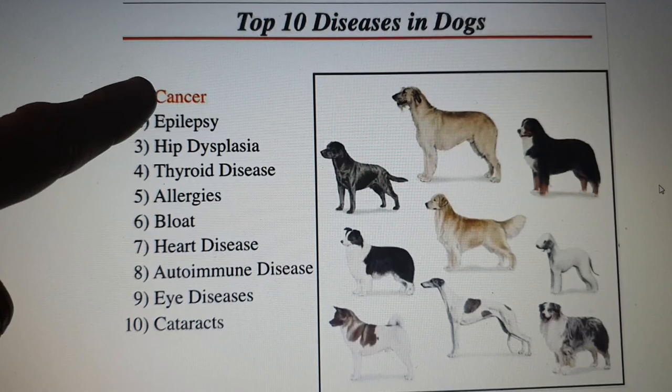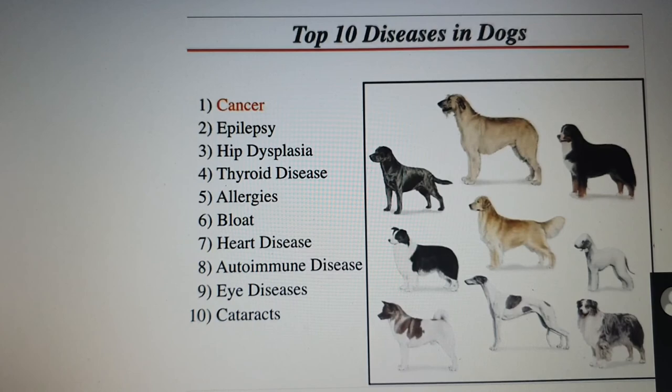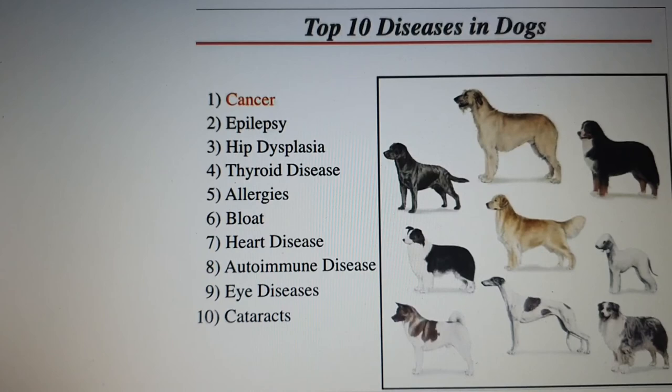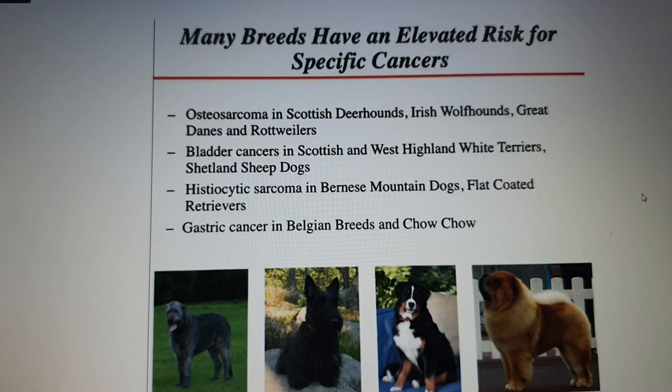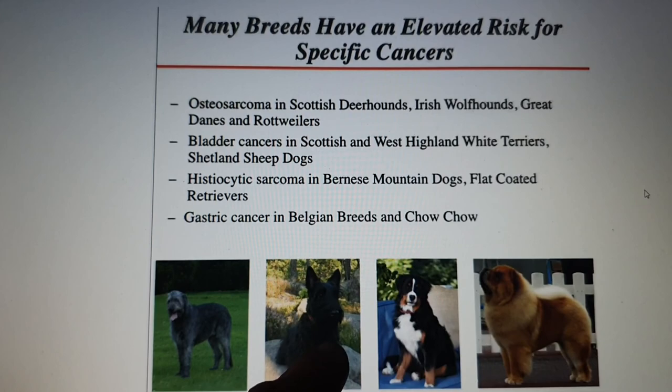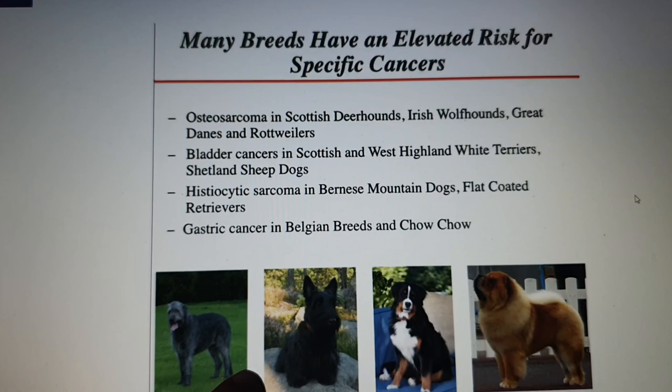The top 10 diseases in dogs: cancer is the most prominent and deadly. Then epilepsy, hip dysplasia, thyroid disease, allergies, bloat, heart disease, autoimmune disease, eye disease, and cataracts. Certain breeds have elevated risk for specific cancers — for example, invasive bladder cancer is very dominant in Scottish Terriers and West Highland White Terriers, but also in Shetland Sheepdogs. Osteosarcoma is often associated with certain pigments.